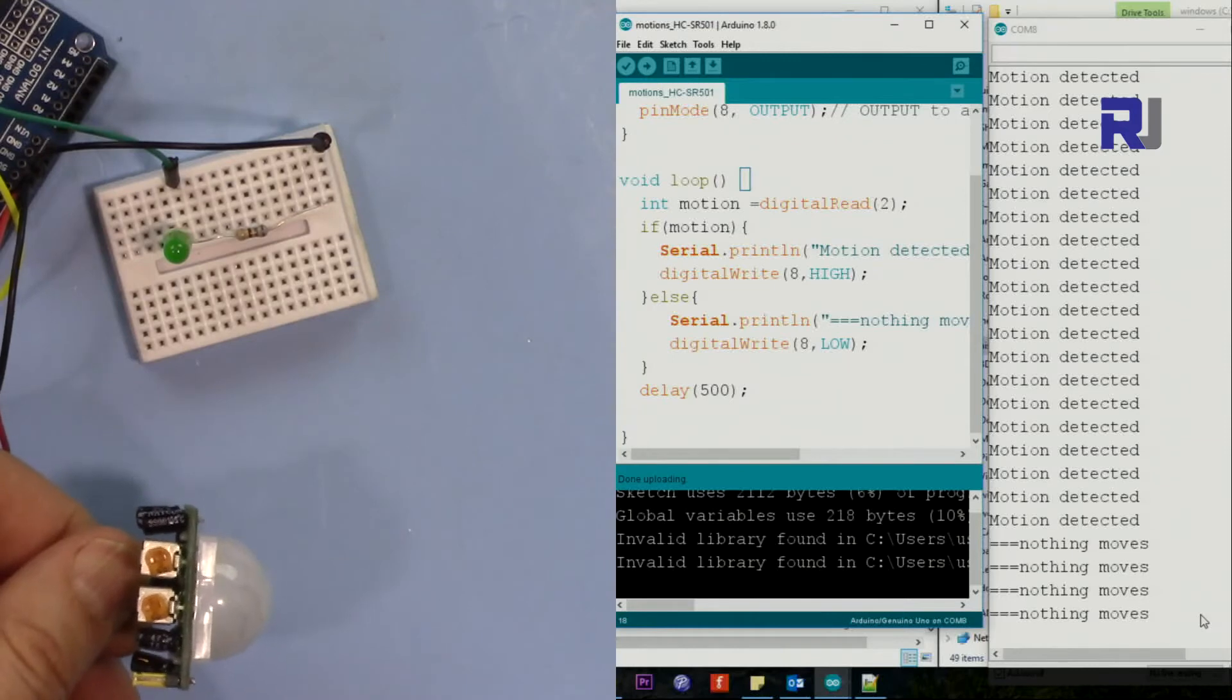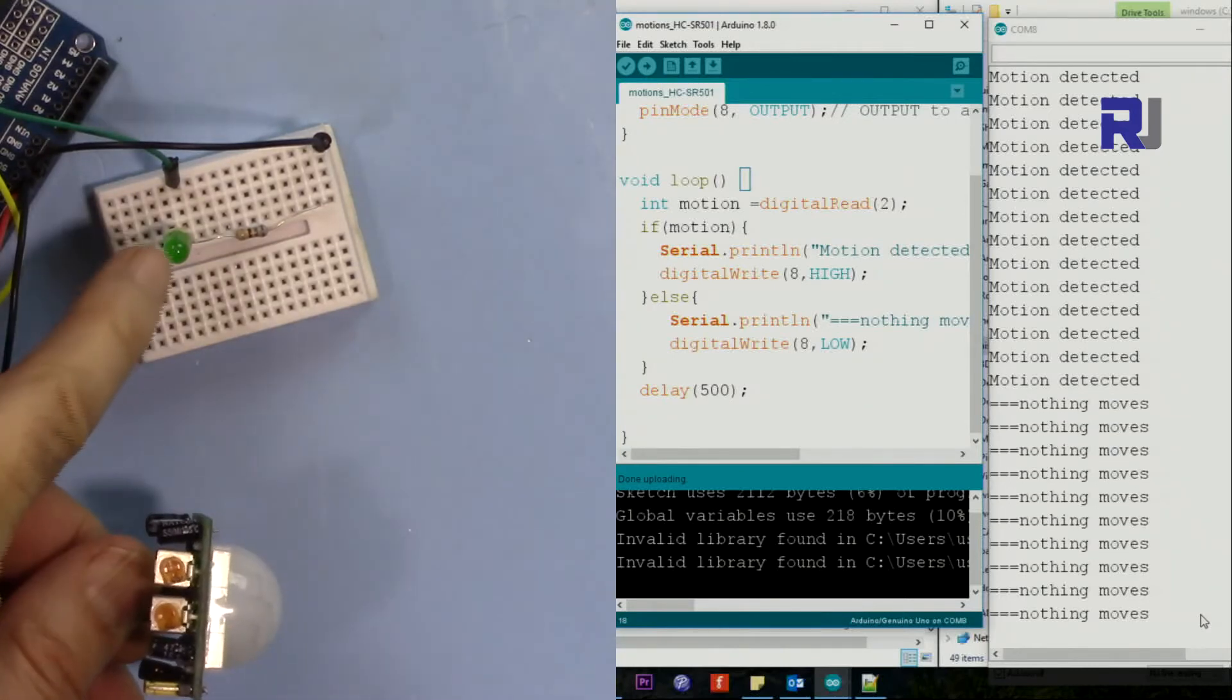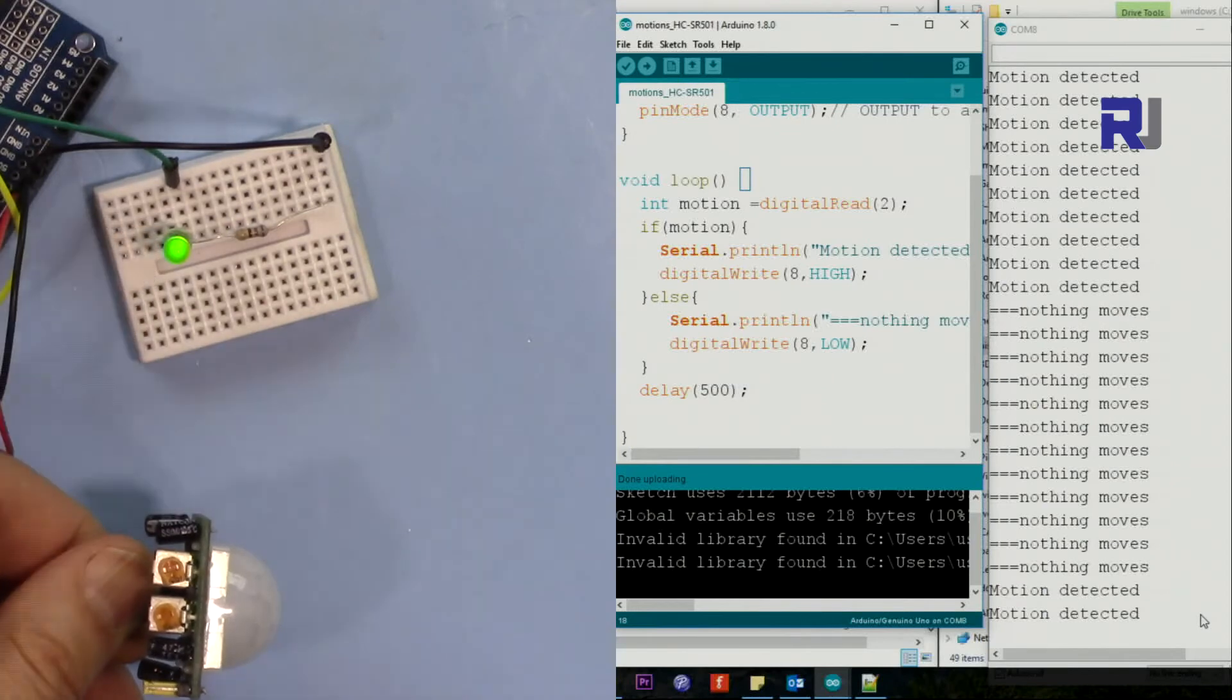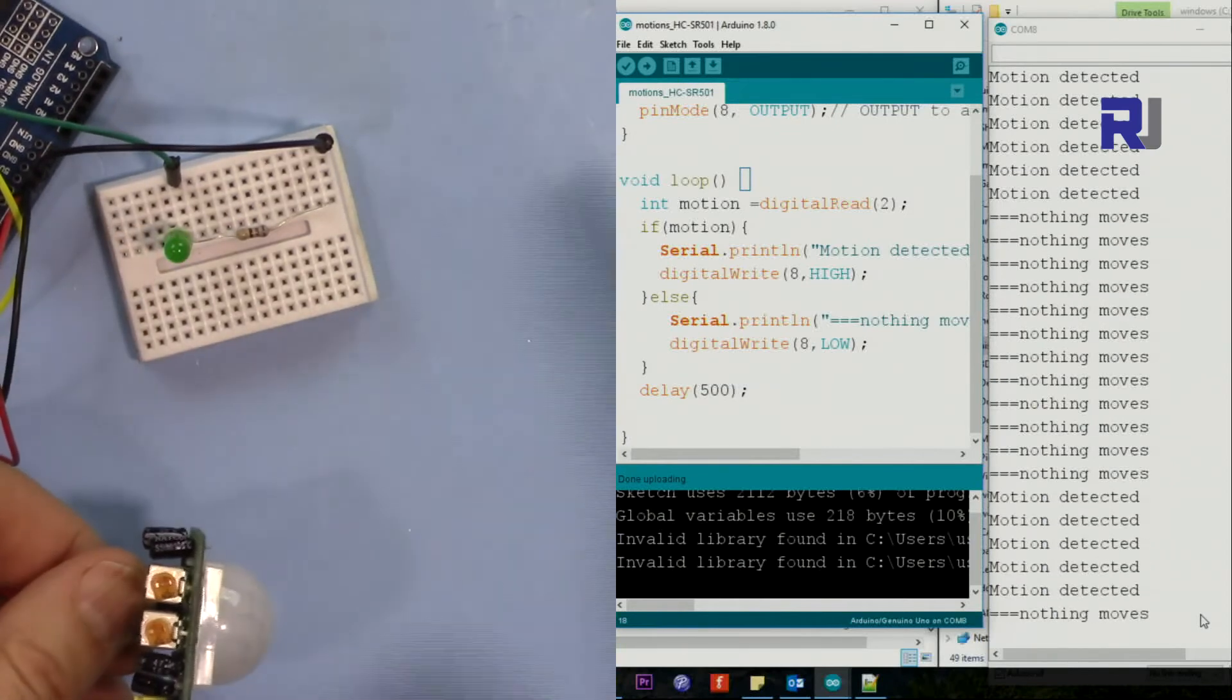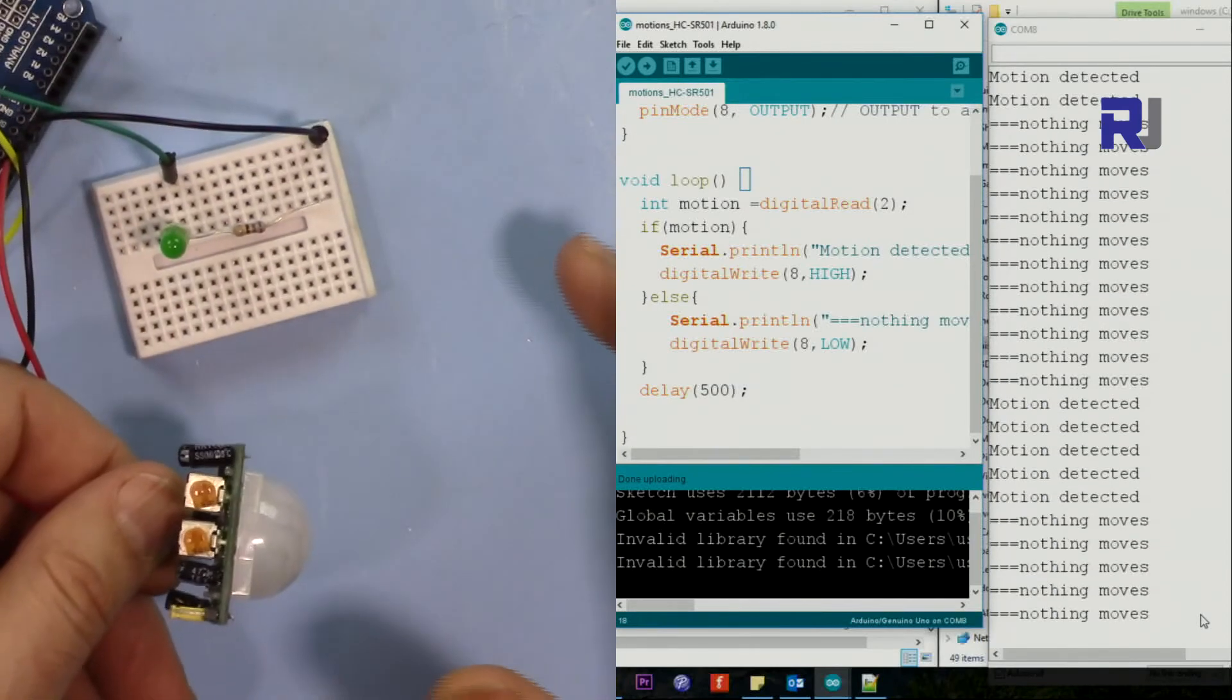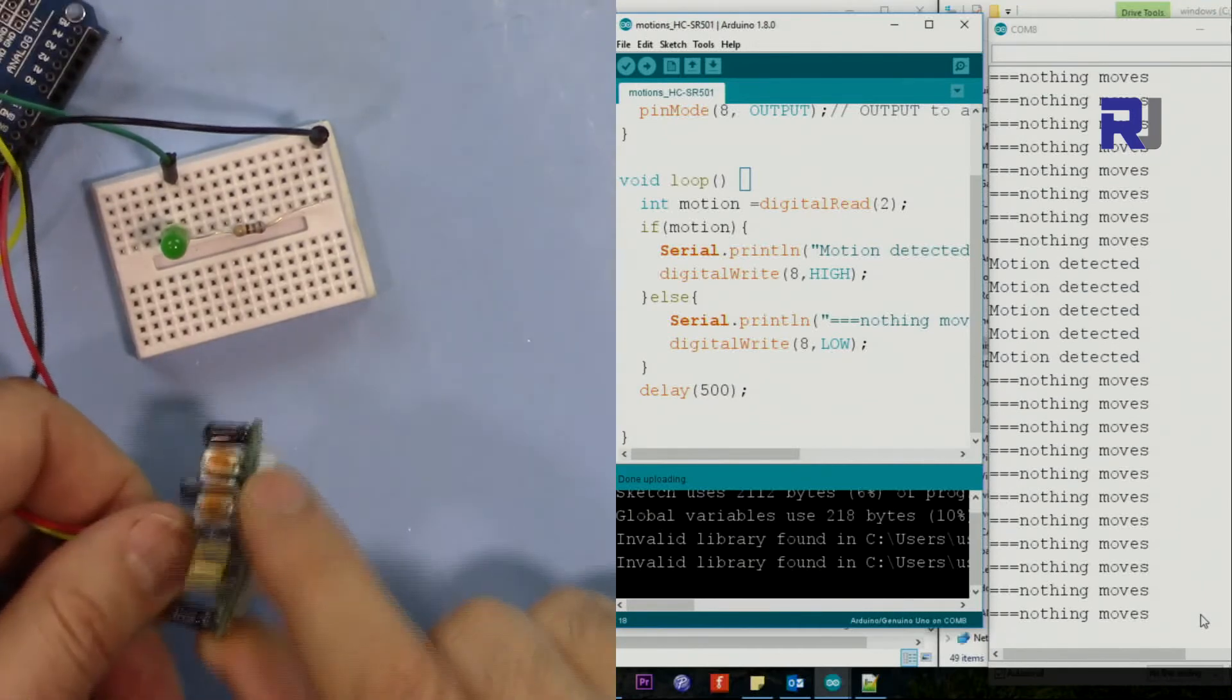Now I've connected it. As you can see here, the LED is off and there is no detection. My hand somewhere moved so it just detected it. Now I put it in the continuous mode, meaning it continuously checks and detects.